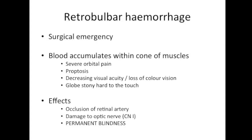A retrobulbar haemorrhage is an emergency because if it is not treated quickly, blindness in the affected eye will ensue. Bone is a living tissue and will bleed when damaged; a retrobulbar haemorrhage occurs when bleeding from the bone tracks into the orbit and accumulates between the cone of extraocular muscles, and because the orbit is a rigid compartment the intraorbital pressure increases. Classically this causes pain behind the eye, proptosis, and decreasing visual acuity. The globe itself will feel hard to touch, and the increase in pressure compresses the retinal artery and damages the optic nerve, which left untreated will lead to irreversible blindness. Beware when examining patients with depressed conscious levels or under the influence of alcohol as their reaction to pain may be reduced.